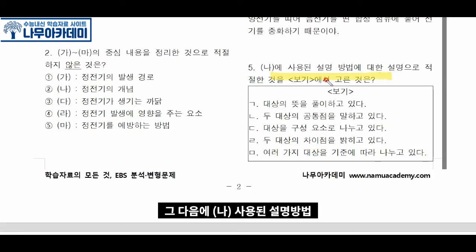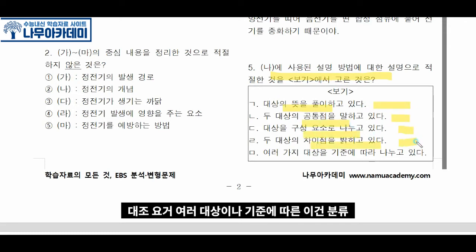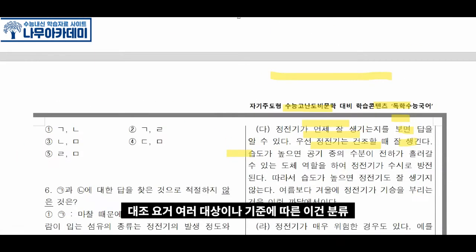다음 문제에서 사용된 설명방법을 찾아보면, 대상의 뜻풀이는 정의, 공통점은 비교, 구성요소로 나누는 것은 분석, 차이점을 밝히는 것은 대조, 여러 대상을 기준에 따라 나누는 것은 분류입니다. 이래서 찾아라.